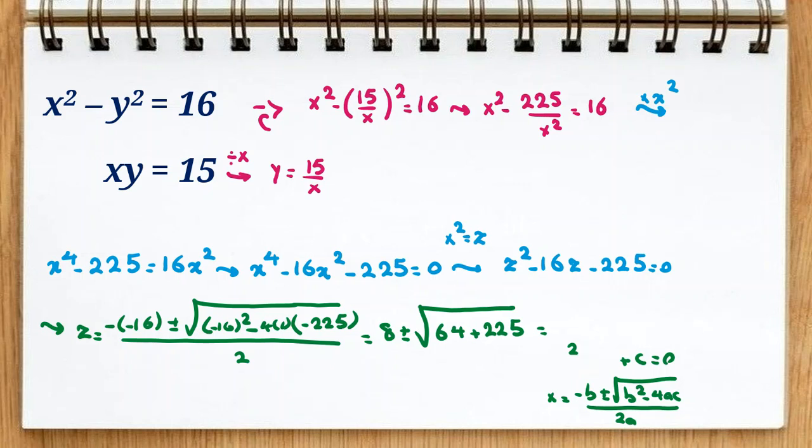Let me erase this part. It will be 8 plus minus—you could also, let me tell you something, you could also factor—it's 8 plus square root of 289. Okay, so it will be 8 plus minus 17. So the answer is 25 or 8 minus 17 is negative 9.